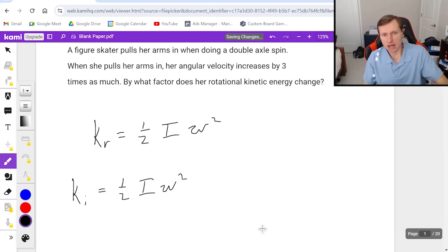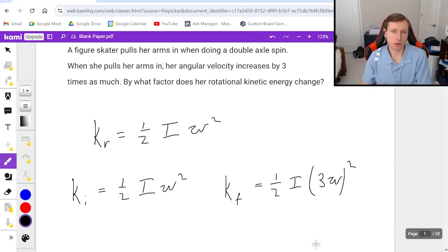But then K_f her final is one half I three omega squared because her angular velocity increased by a factor of three. You got to square both these terms so it's one half I times nine omega squared like this.